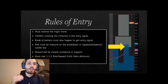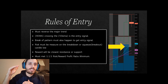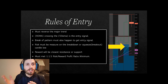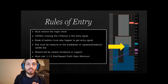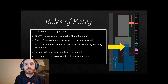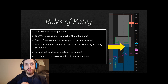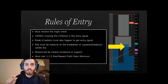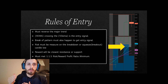The risk must be measured on the breakdown or squeeze breakout candle low — or the high, depending on which side you're trading. You use either the resistance or support of that candle as your stop. Once the crossover happens and the pattern breaks down, you're in the trade and ready to manage it. The reward target must be near the next resistance or support level, and we must meet a minimum of at least a 1-to-1.5 risk-to-reward ratio to have a mathematical advantage.